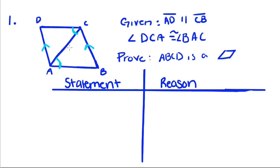Okay, so first we're going to write down the given information. So AD is parallel to CB, and angle DCA is congruent to angle BAC, and our reason is that that's given to us.